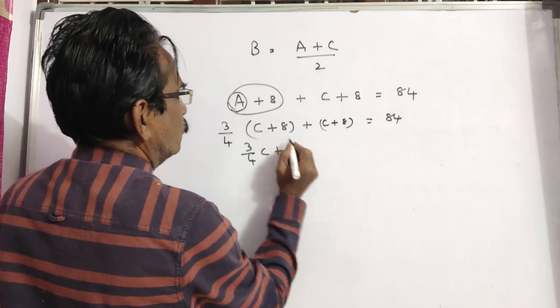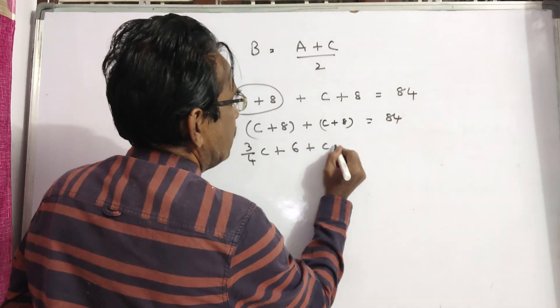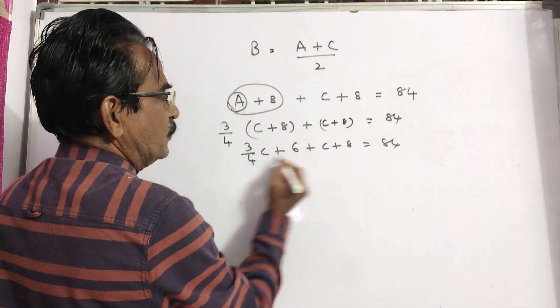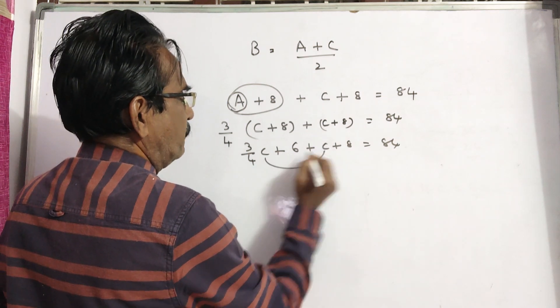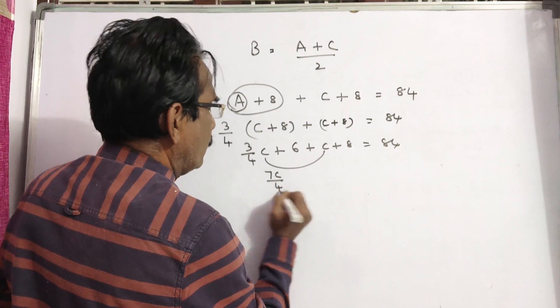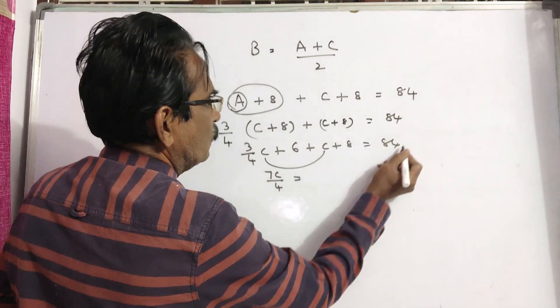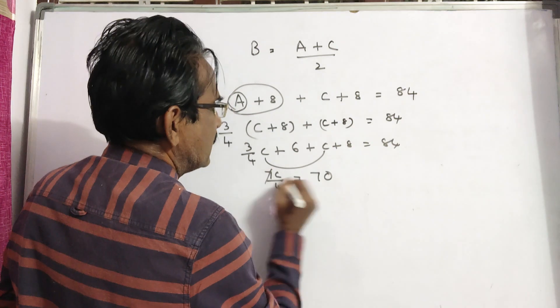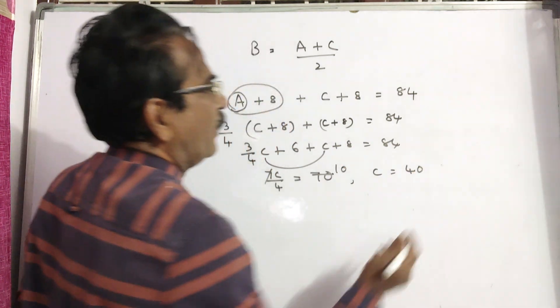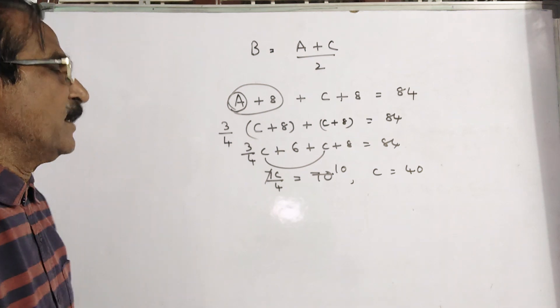7C by 4 is equal to 84 minus 14, which is 70. So C is equal to 40 years. C is equal to 40 years.